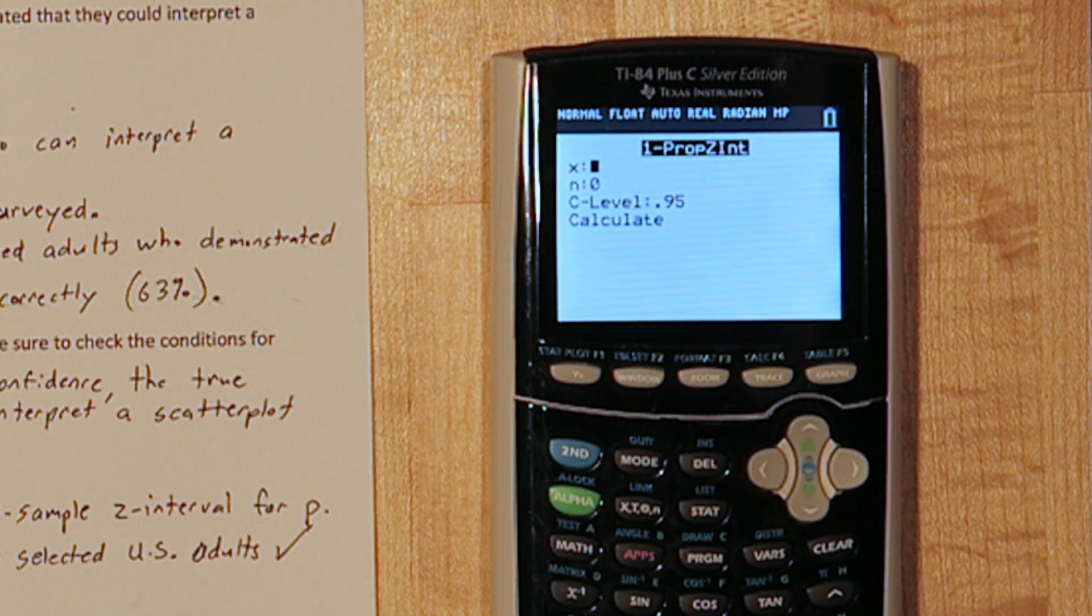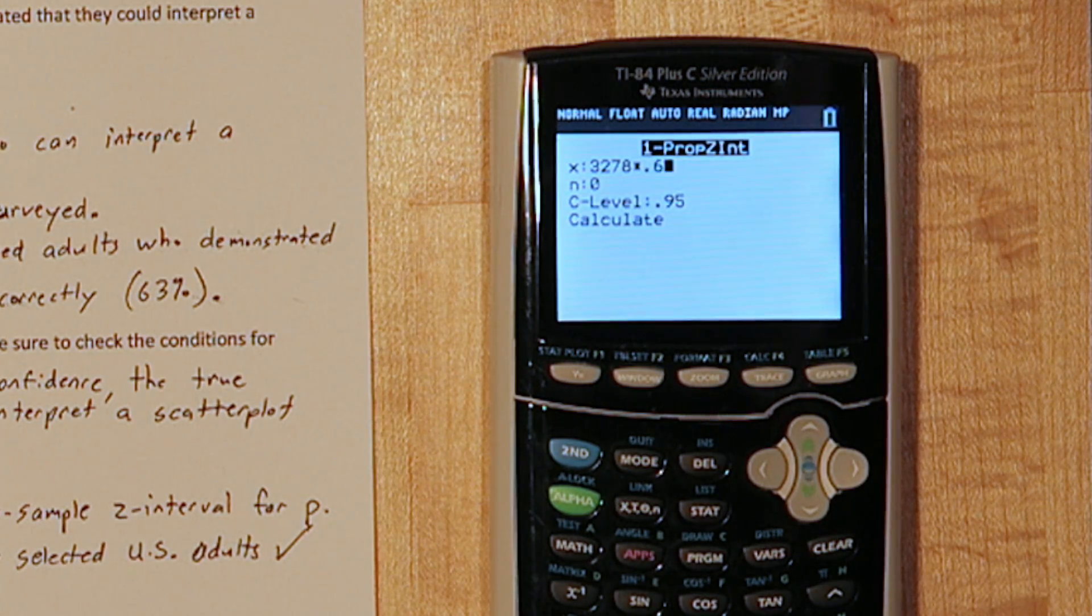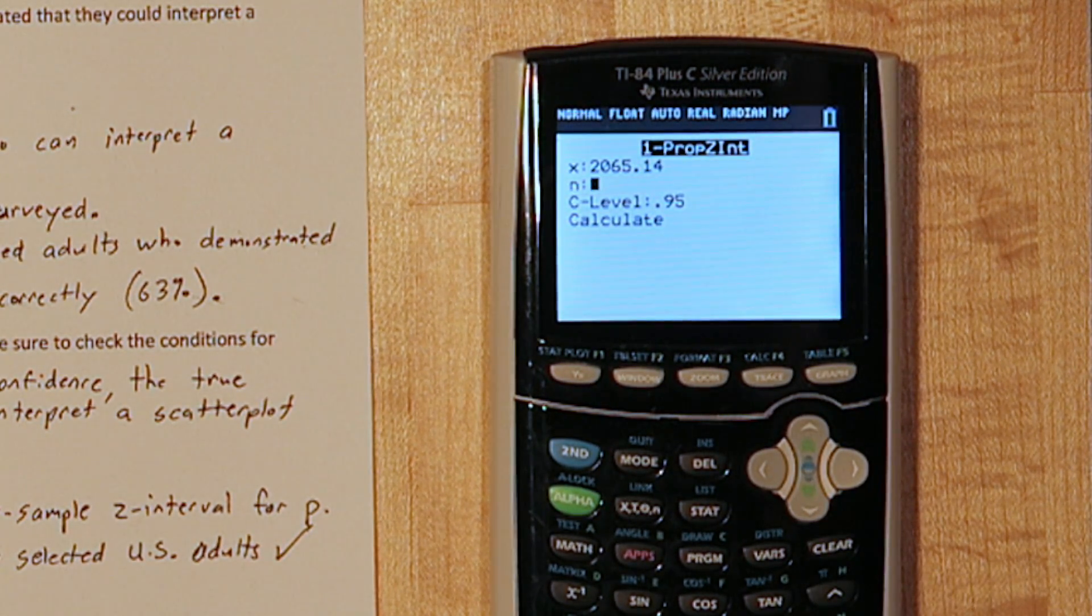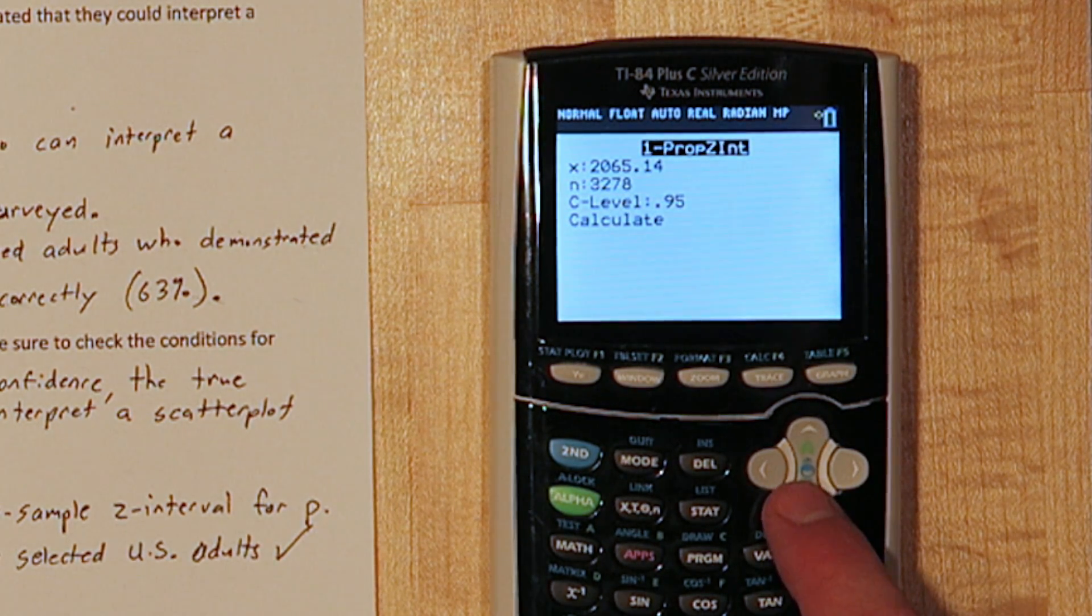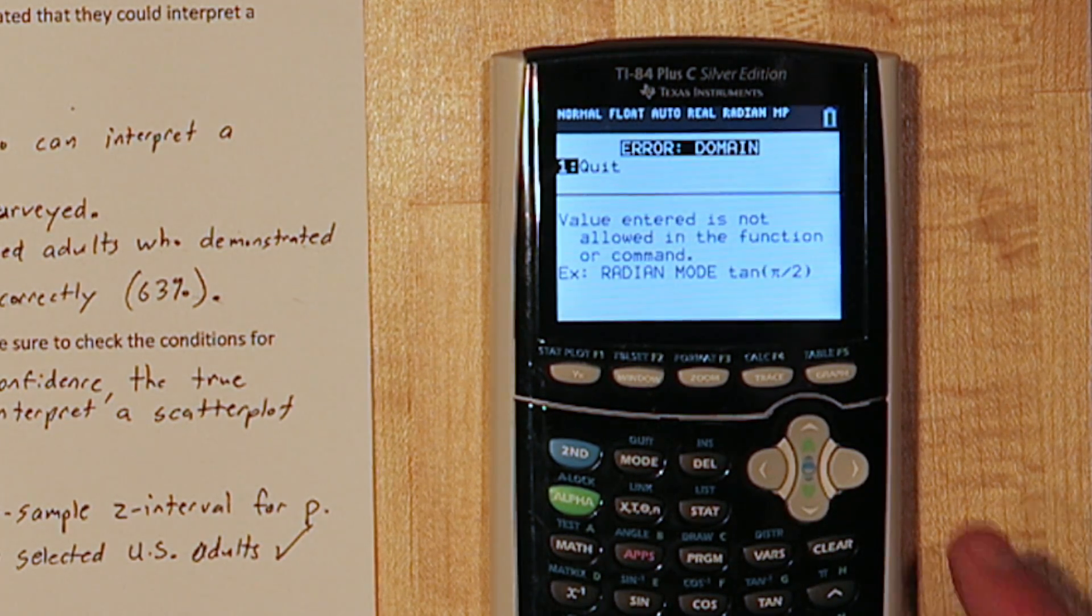For x, we need to tell it how many people in our sample demonstrated they could interpret a scatter plot correctly. So we'll do 3,278 times .63. For n, let's type the sample size, 3,278. And for C level, put .9 for a 90% confidence level.